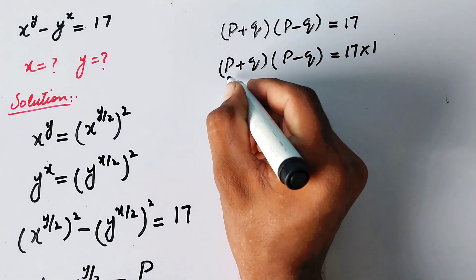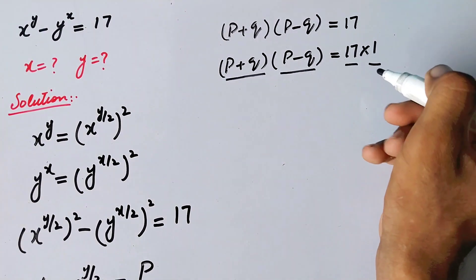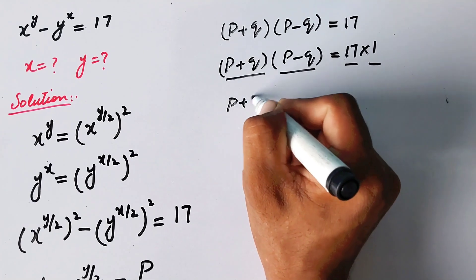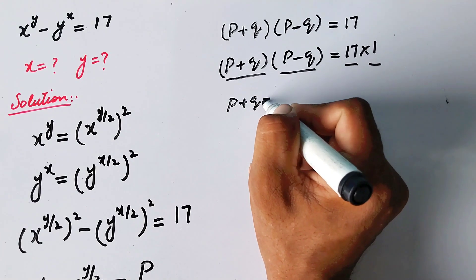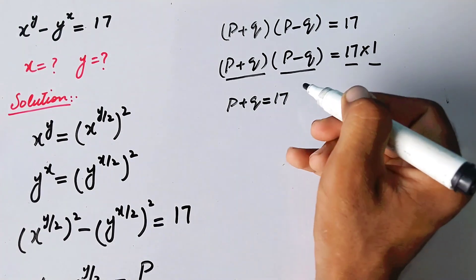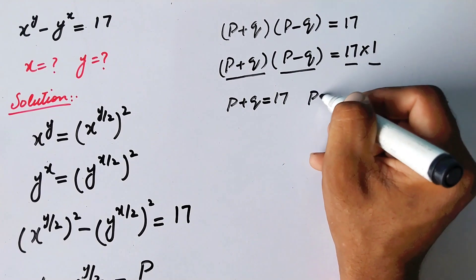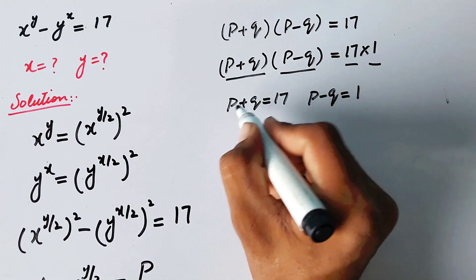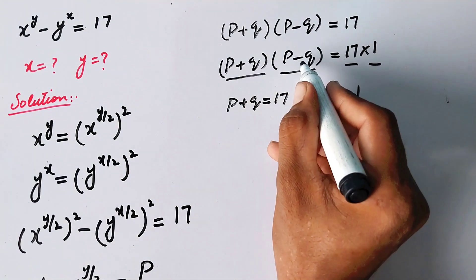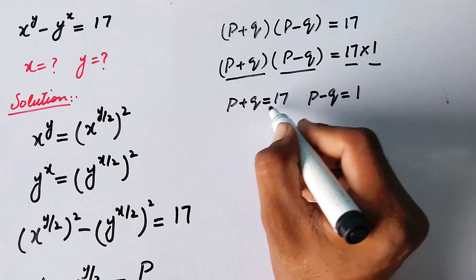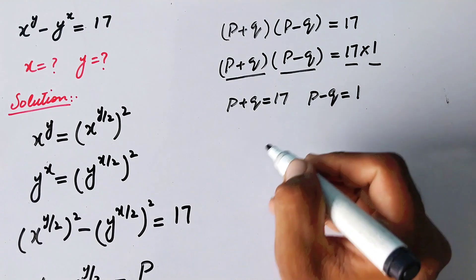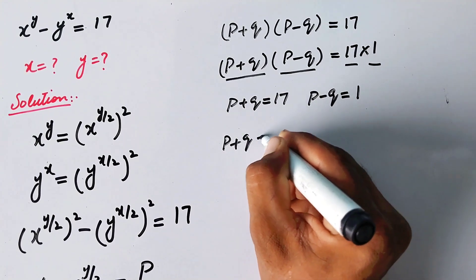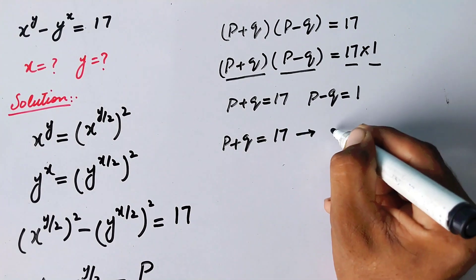We can see two factors on both sides. Since P+Q is greater than P−Q, we write P+Q = 17 and P−Q = 1.